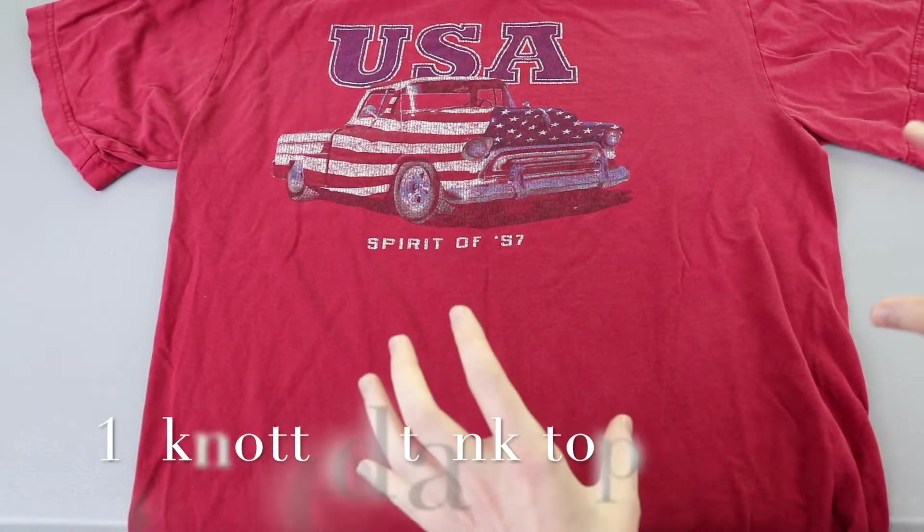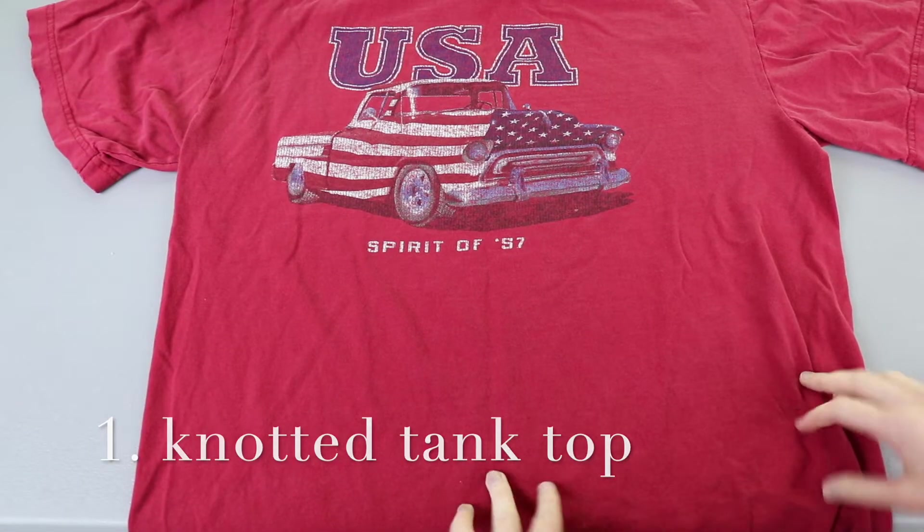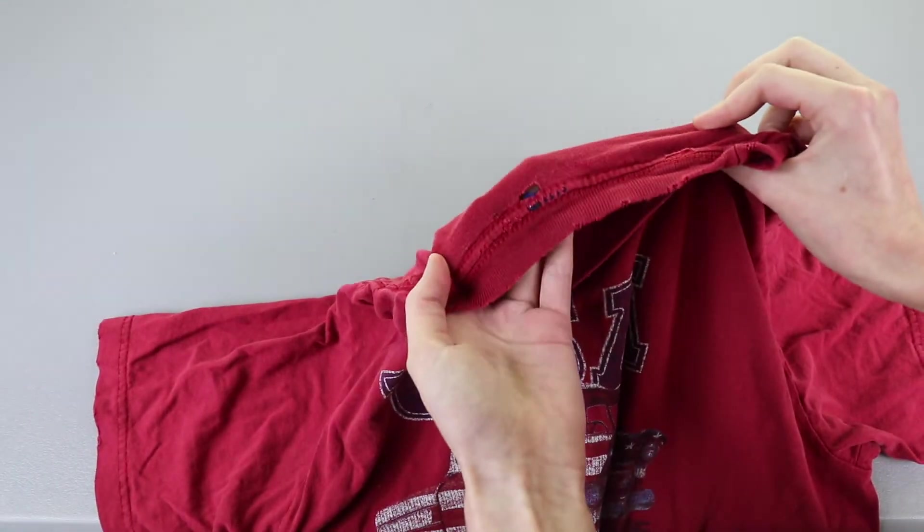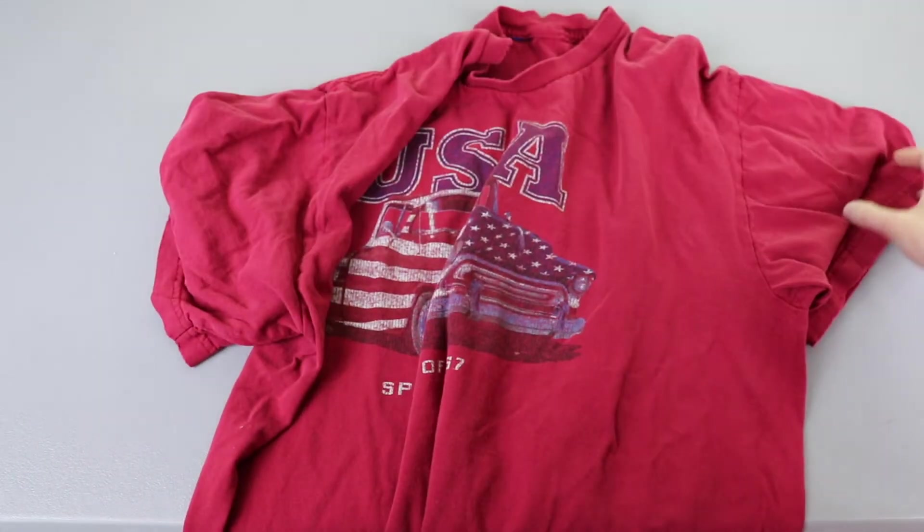So our first DIY is to turn an oversized t-shirt into a tank top. This is one that I've just used mainly as a pajama shirt but it's kind of falling apart. I've got holes along the top so we're going to cut this down and turn it into a cute tank top.